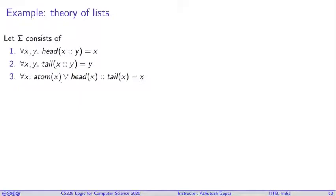Now the third axiom says either some object is atomic or it is a construction. And if I split it, I pick its head and tail and build it back again, I will obtain the same object back. Lastly, if I have some constructed list, it is not an atomic list.